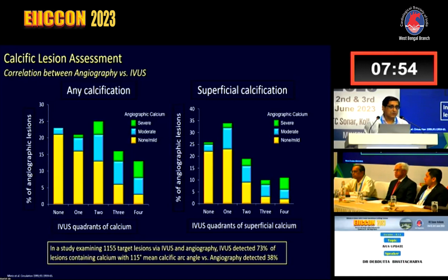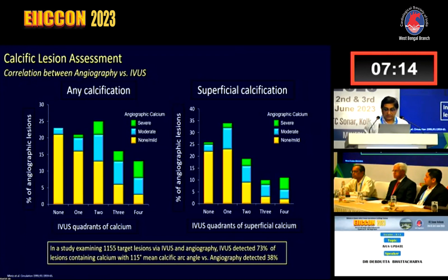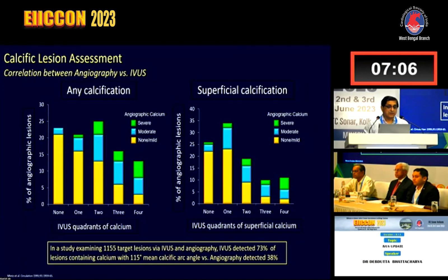Sometimes you won't be able to see calcium on angiography, but IVUS will show you. In terms of how many quadrants are affected, whether it is severe or moderate, IVUS is more sensitive than angiography. It also tells you whether calcium is superficial, deep, or a combination, the length of the calcium, and — increasingly — calcific nodules, which were not known at the time of Mintz's paper.